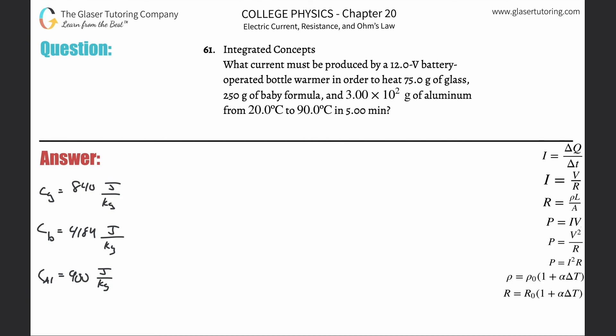Number 61, integrated concepts. What current must be produced by a 12 volt battery operated bottle warmer in order to heat 75 grams of glass, 250 grams of baby formula, and 3 times 10 to the 2 grams of aluminum from 20 to 90 in 5 minutes?